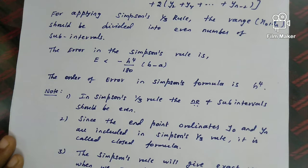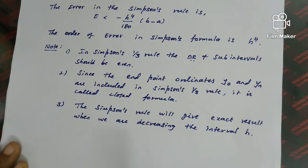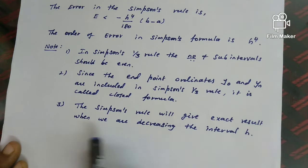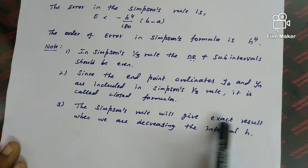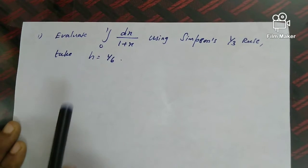Note 3: Simpson's rule will give exact result when we are decreasing the interval h. So when asked 'when will Simpson's rule give exact result?', the answer is: when we decrease the interval h. These are the basic things about Simpson's 1/3 rule, and these are two important notes.